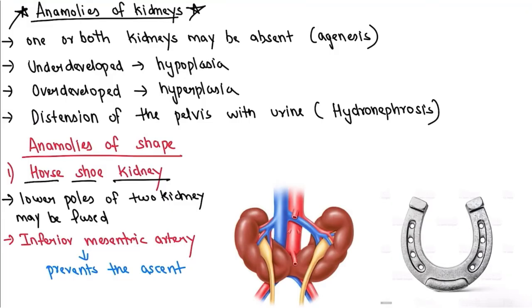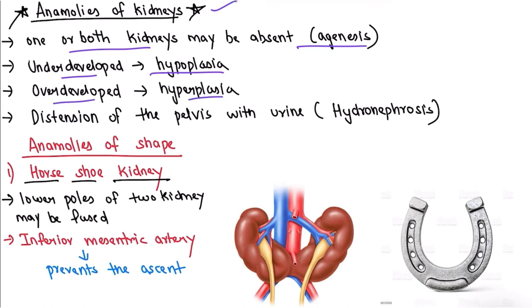Now let's study some clinical correlations, starting with the anomalies of the kidney. If one or both kidneys are absent, the condition is called agenesis. If the kidneys are underdeveloped, it is called hypoplasia. If the kidneys are overdeveloped, it is called hyperplasia. If there is a distension of the pelvis with urine, the condition is called hydronephrosis.